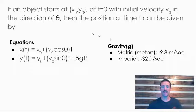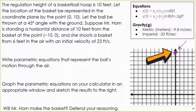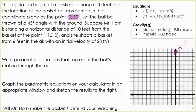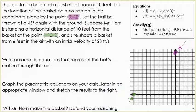The regulation height of a basketball hoop is 10 feet, so there is our hoop right there. It says we're going to locate it at 0,10, and so the ball is going to be shot at a 45 degree angle with the ground, and suppose Mr. Horn is standing a horizontal distance 10 feet away, which we're going to call 0, negative 10, 0 will be right there.